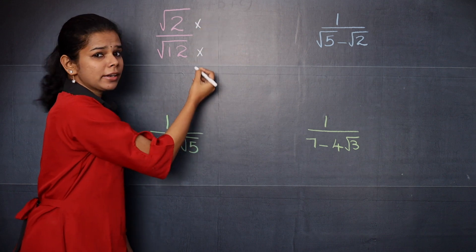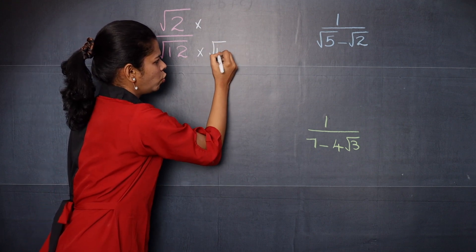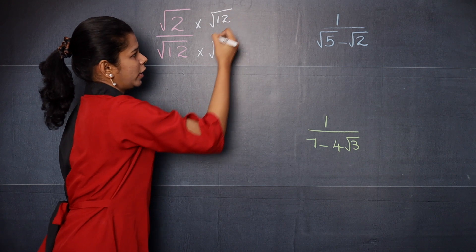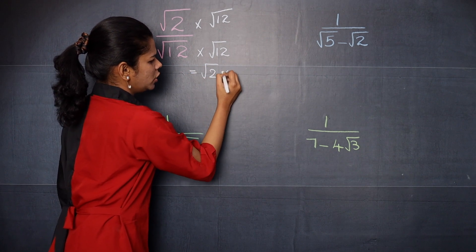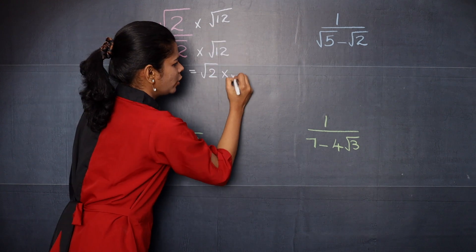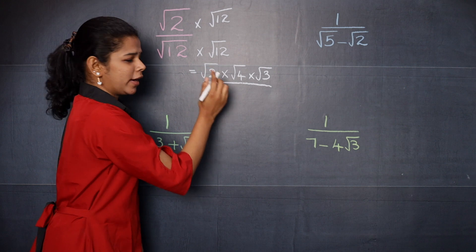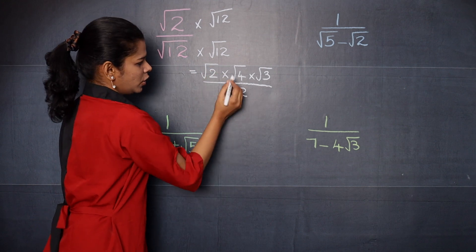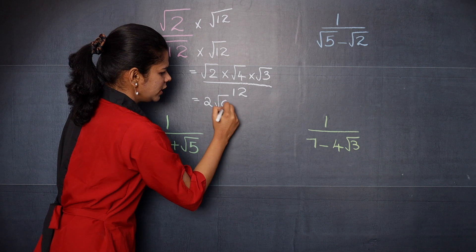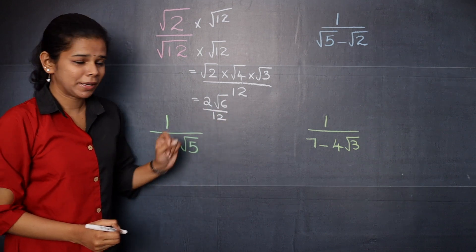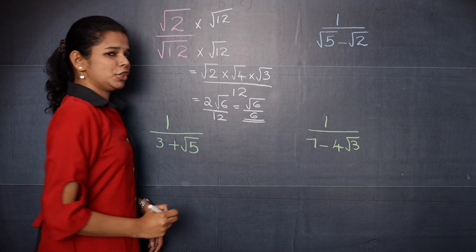You will multiply the numerator and denominator by the denominator. Here the denominator is root 12, so you are going to multiply by root 12 on both numerator and denominator. Now this is equal to root 2 into — I am going to split root 12 and write root 4 into root 3, divided by root 12 into root 12, which is 12. Root 4 is 2, so 2 into root 2 into root 3 is root 6 by 12. This 2 and 12 can be cancelled, so you get root 6 by 6. That is your answer.